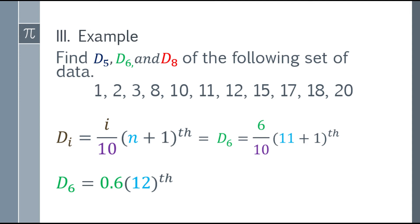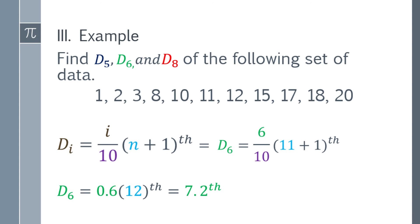Now, you have to simplify it. So 0.6 multiplied by 12, that will be 7.2. So it's the 7.2th position. The problem here is there's a decimal. This is where the interpolation formula comes in.